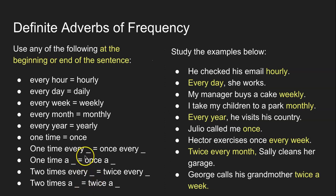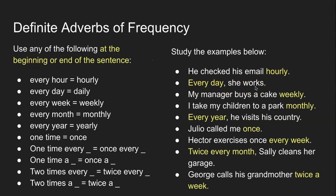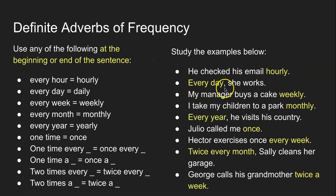The definite adverbs of frequency show us specific time, so we can use them at the beginning or at the end of a sentence. For example: 'He checked his email hourly.' 'Every day, she works.' If you use 'every hour' instead of 'hourly,' you can say: 'He checked his email every hour.' If you place the definite adverb at the beginning of the sentence, don't forget to use a comma.